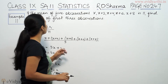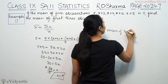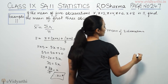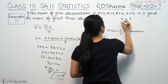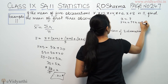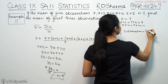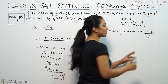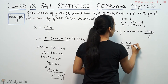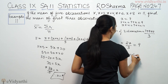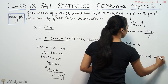If x is 7, find the mean of the first 3 observations. The first 3 observations are x, x plus 2, x plus 4. So x is 7, x plus 2 is 7 plus 2 that means 9, and x plus 4 is 7 plus 4 that means 11. We have 3 observations, sum is 7 plus 9 plus 11, divided by 3 — that is 27 by 3 — that means 9. So mean of first 3 observations is 9.